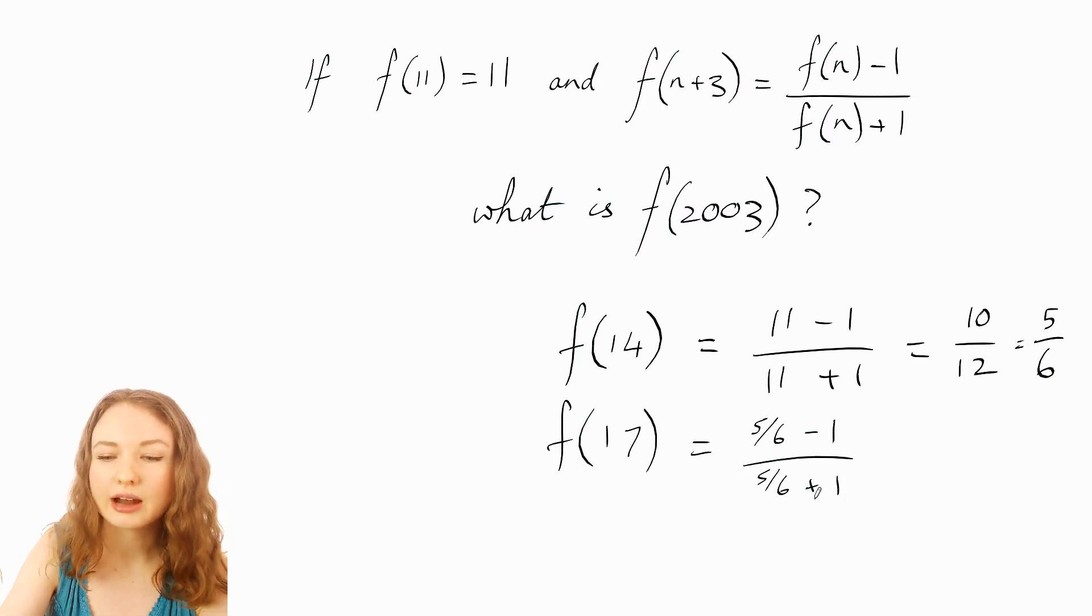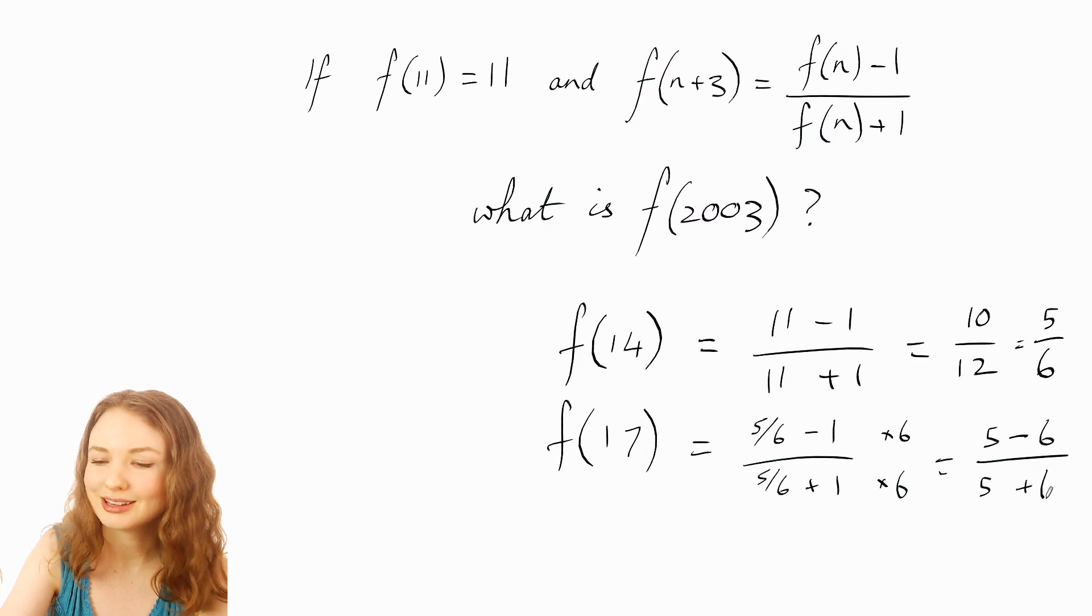Now to deal with that kind of expression where you've got fractions within a fraction, what you want to do is just multiply top and bottom by 6 and that's gonna get rid of these fractions within the fraction. So that'll give you 5 minus 6 over 5 plus 6 so negative 1 over 11.